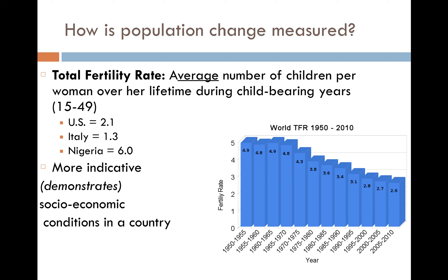Looking at the right-hand side, the world's total fertility rate is going down — another reflection of access to contraception and the changing role of women as more women work and take on leadership positions. Total fertility rate differs from crude birth rate: crude birth is the general indication of how many children are being born on the whole, while total fertility rate individualizes this to a single woman and helps us better demonstrate the socioeconomic conditions of a country.